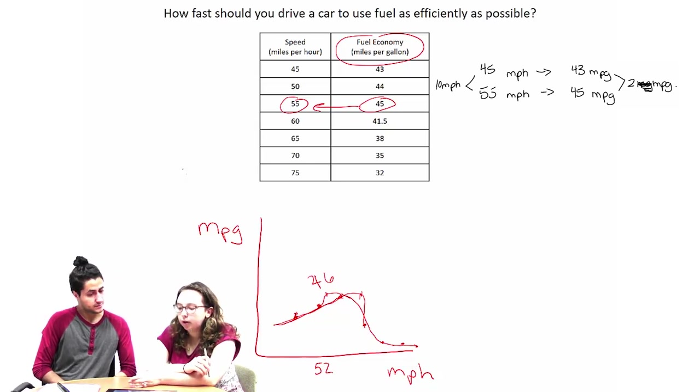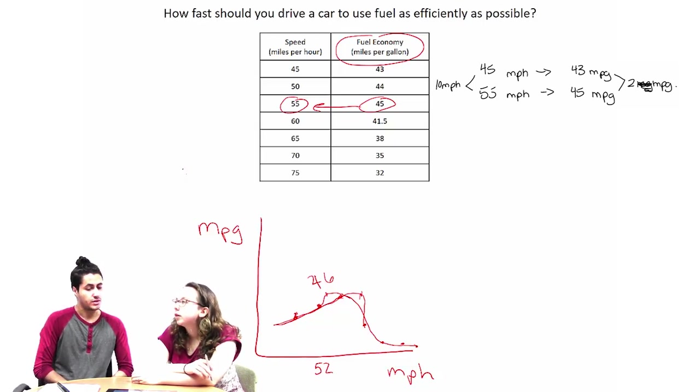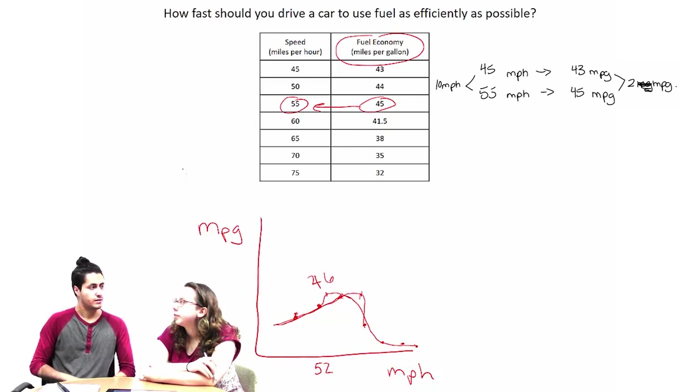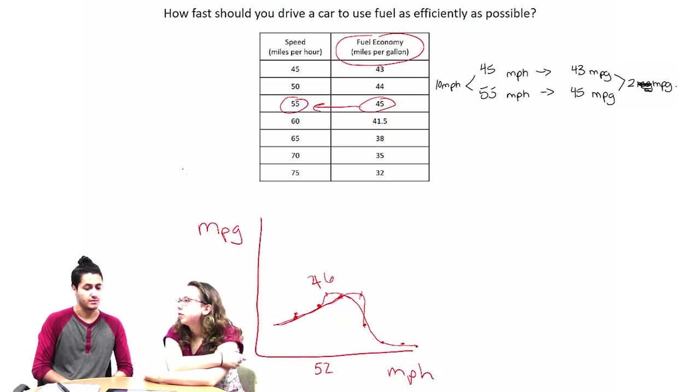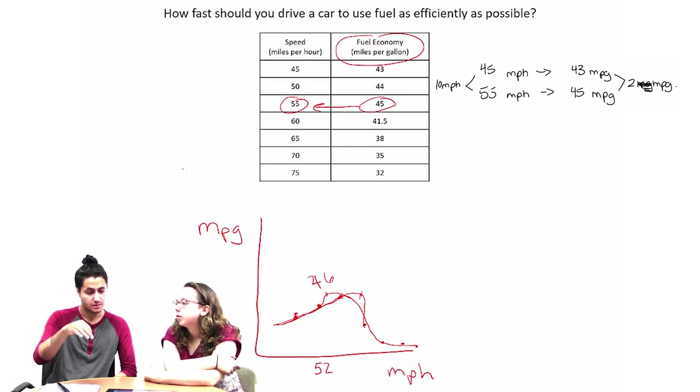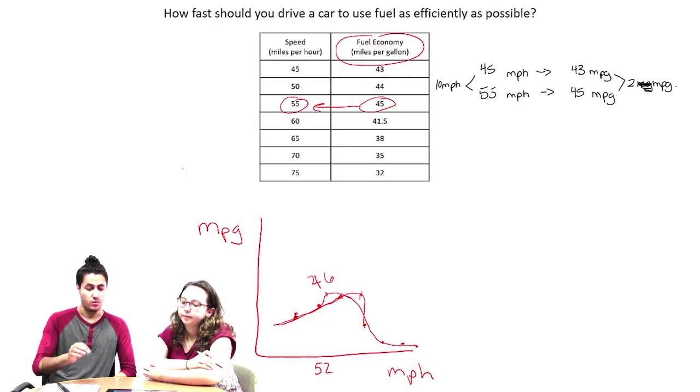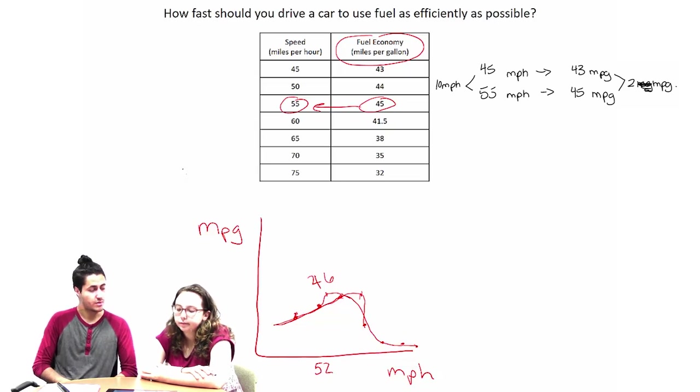Yeah. I mean, if we're only looking at the whole numbers, I would agree with that. But what if we could say 51.5 miles per hour? Yeah. So we need even more data points to give us a more accurate guess as to what the peak will be and at what speed that peak is associated with.